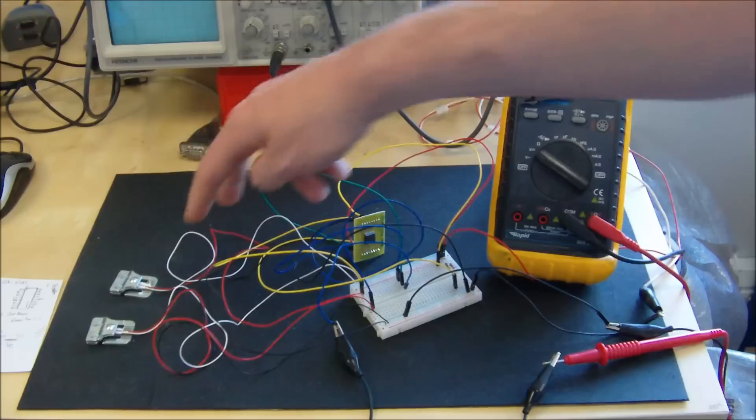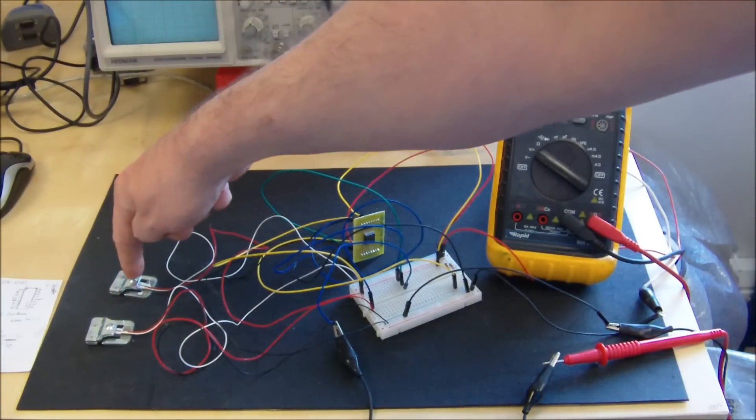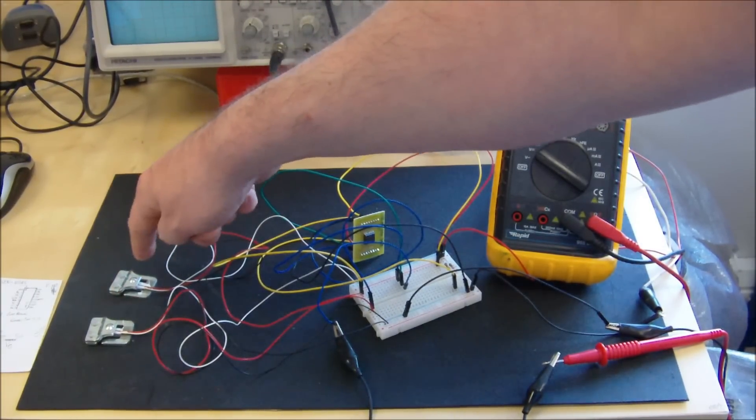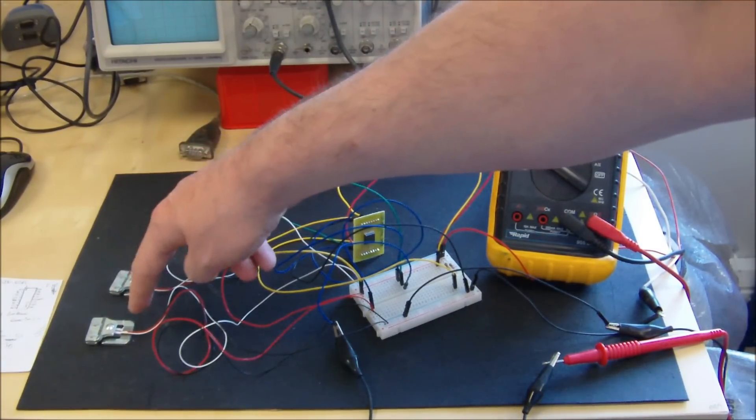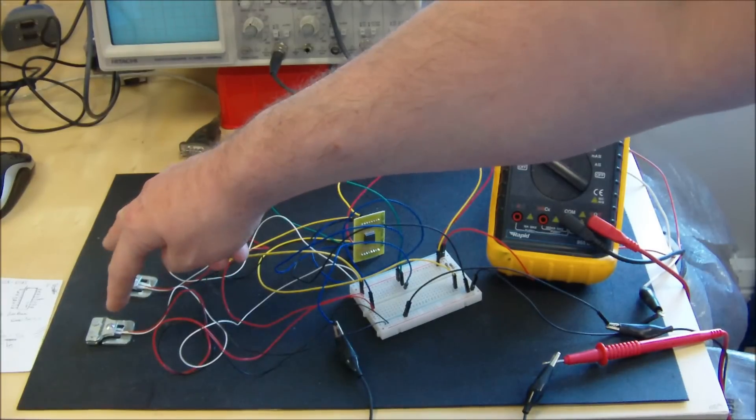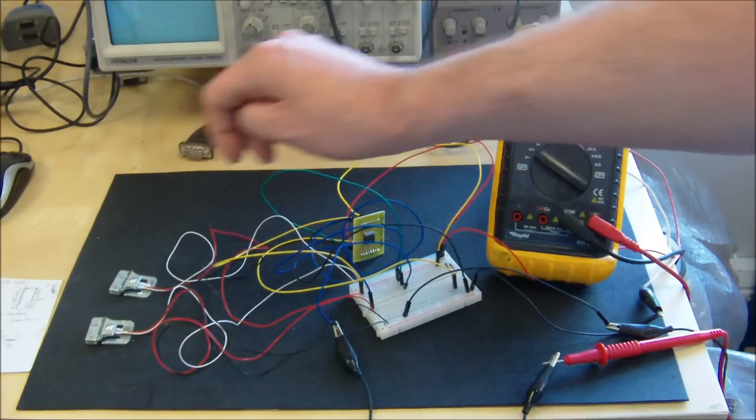And we just connected two load cells in, one of them to do the sensing. Each load cell is kind of like half a bridge, so we've connected up two load cells to make sure that we've got the full bridge there.